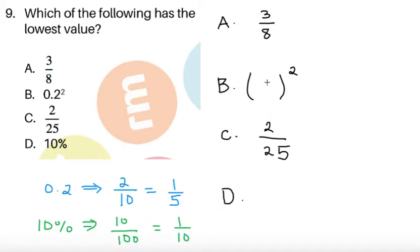So answer B would be 1 fifth quantity squared. Then answer D is already in lowest term, so 1 tenth. So 1 fifth squared, that's equal to 1 over 25. And comparing B and C, B is obviously lower.